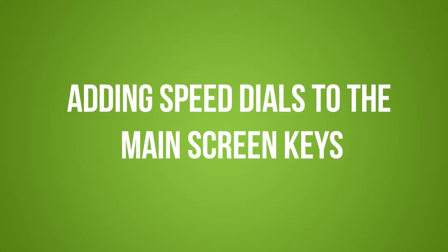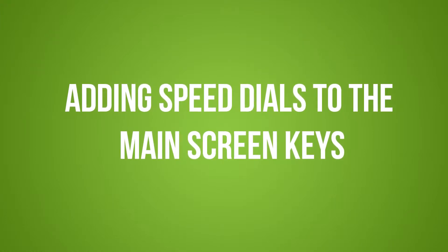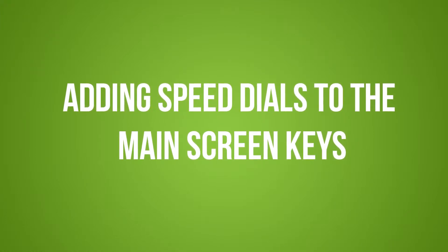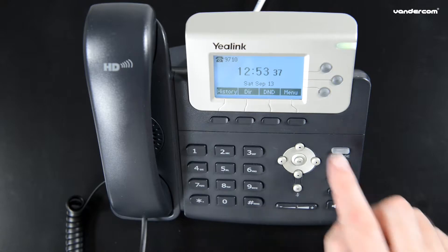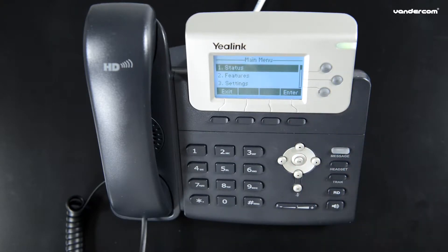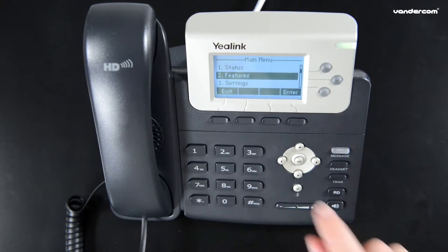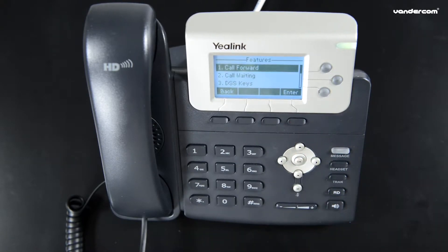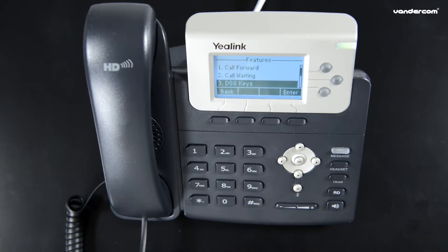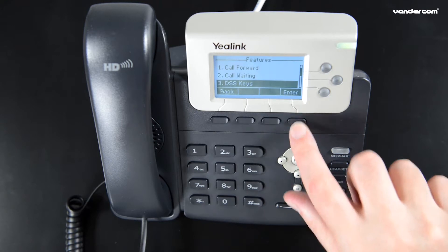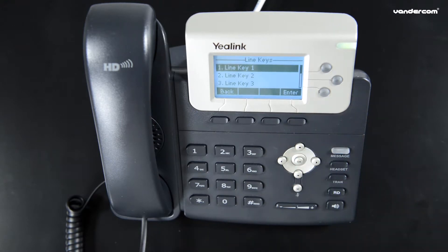Adding speed dials to the main screen keys. Press the menu soft key, then Features. Scroll using the down arrow key to DSS Keys, or press number 3 and enter.